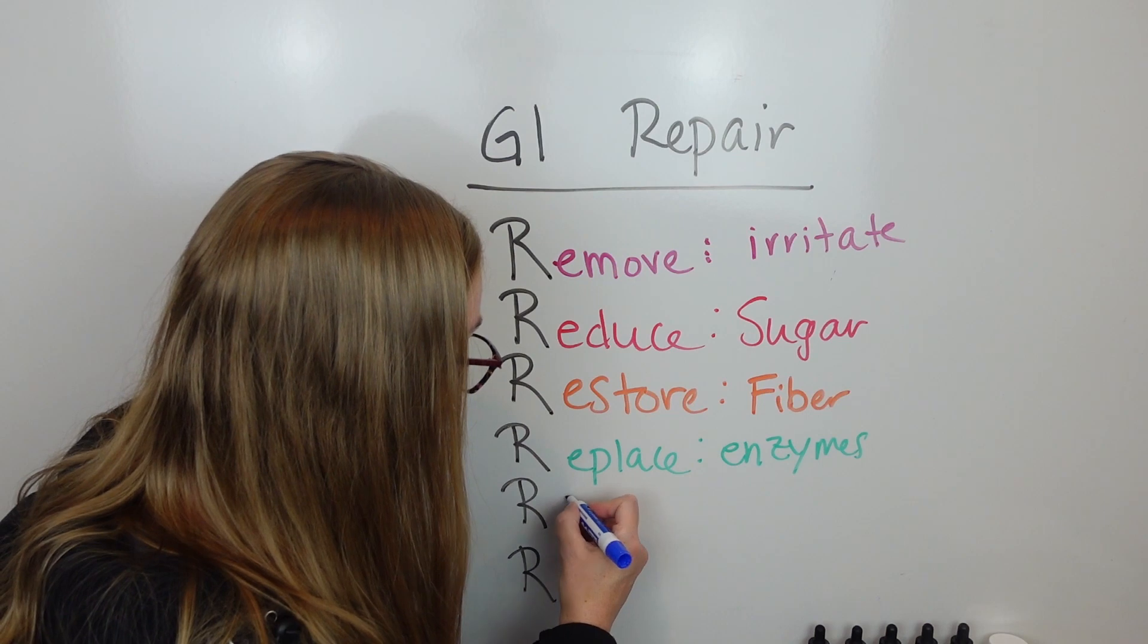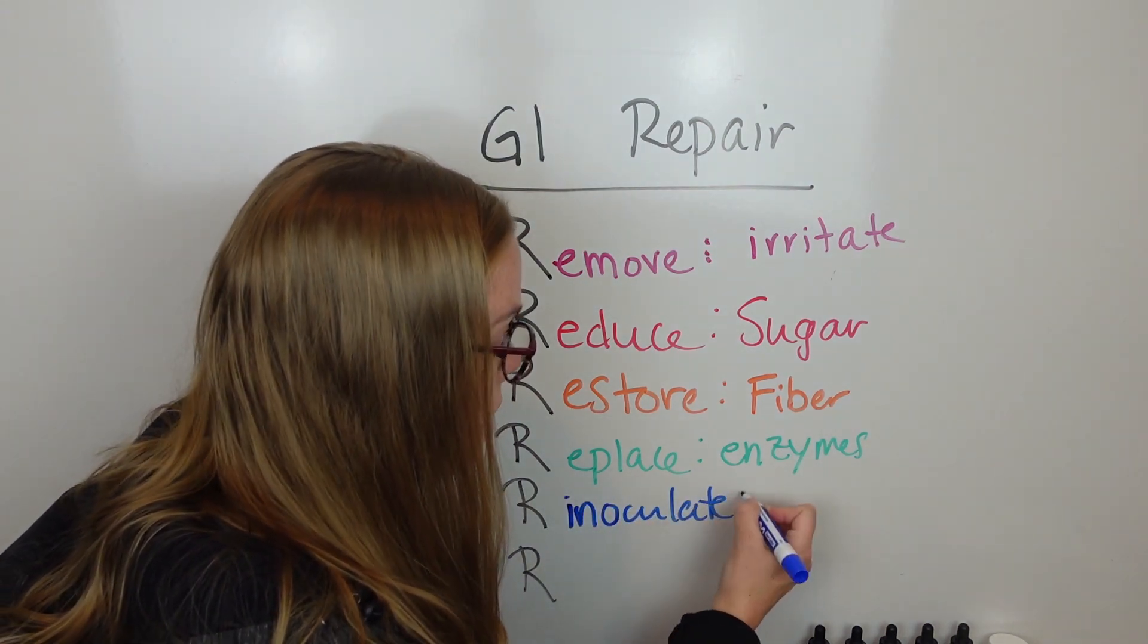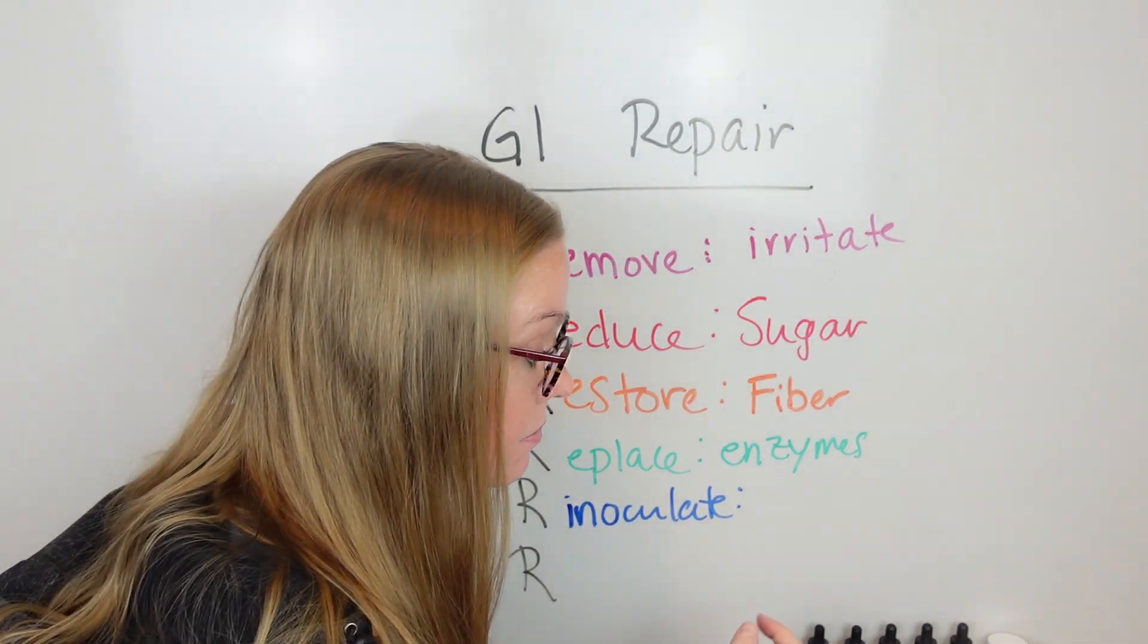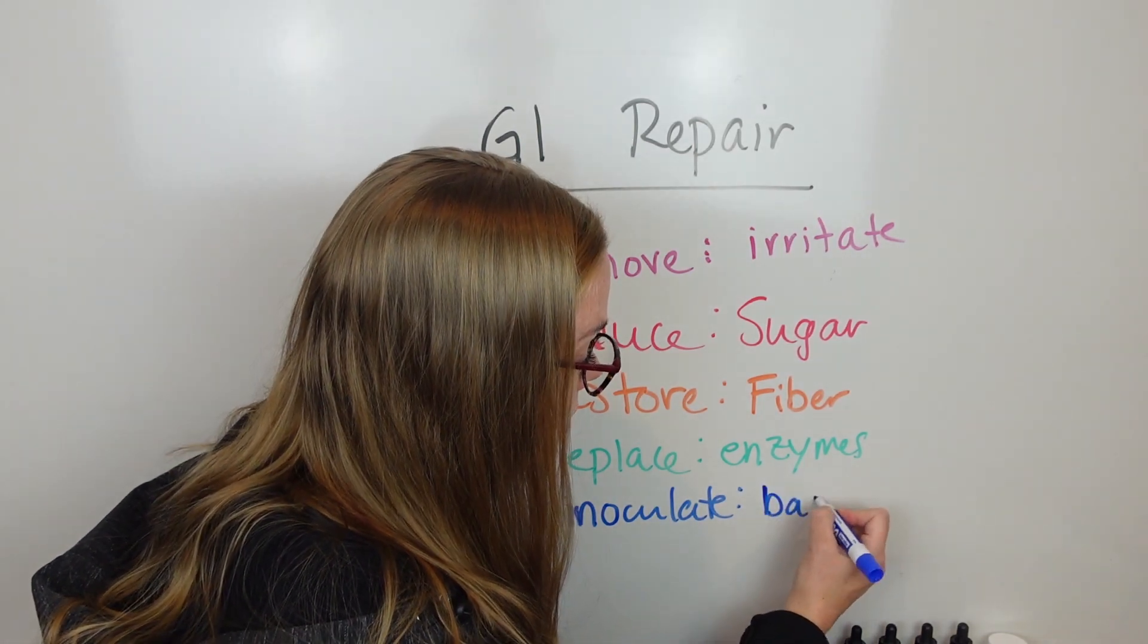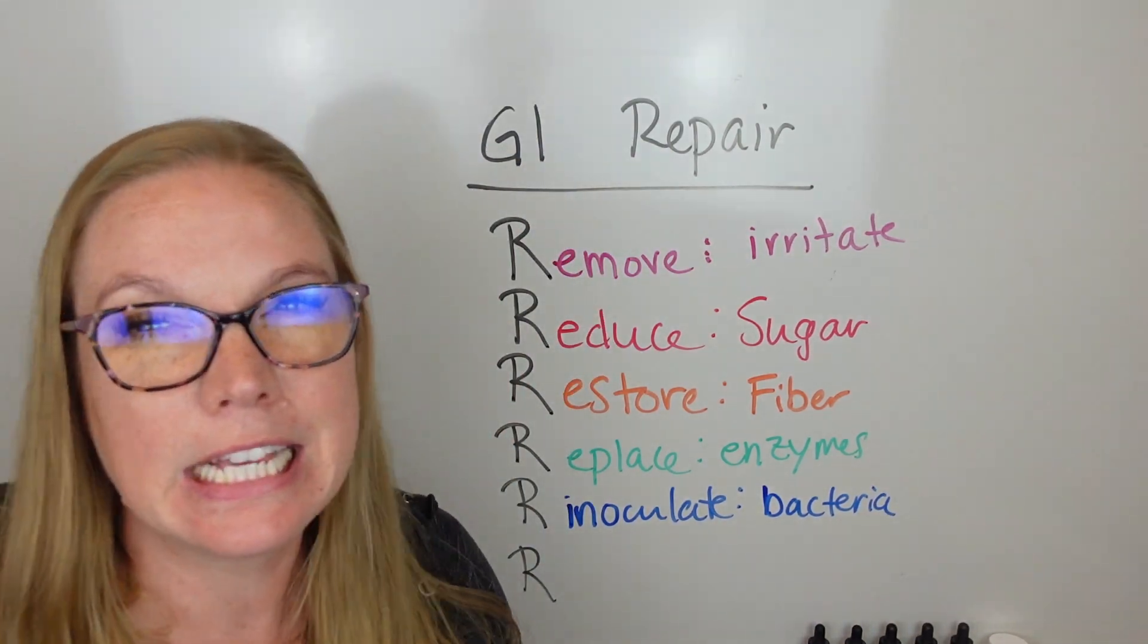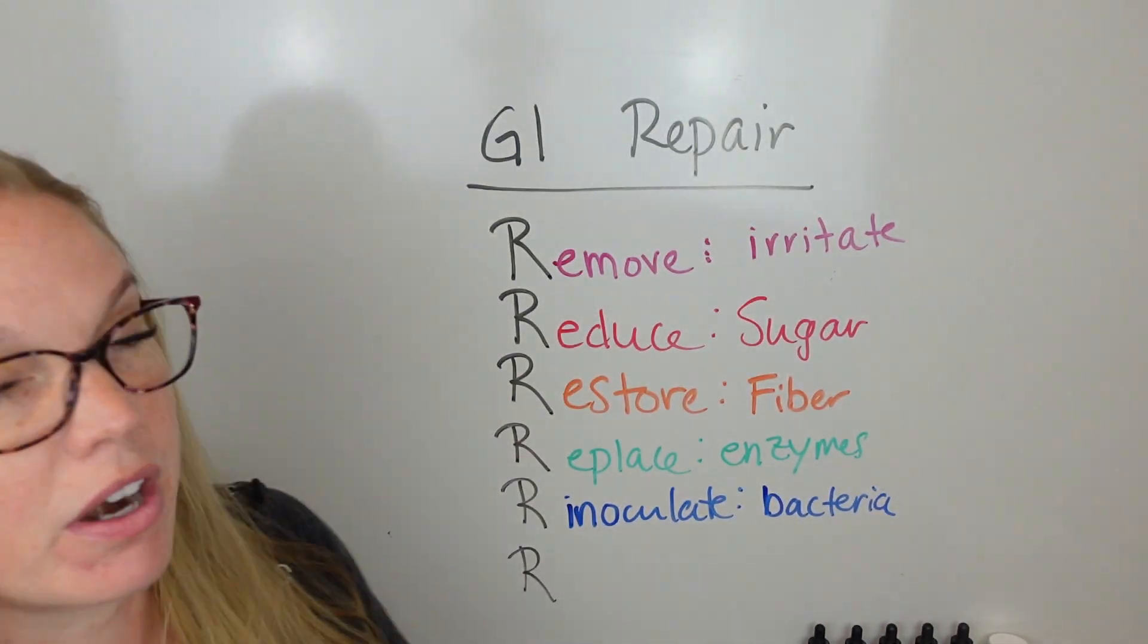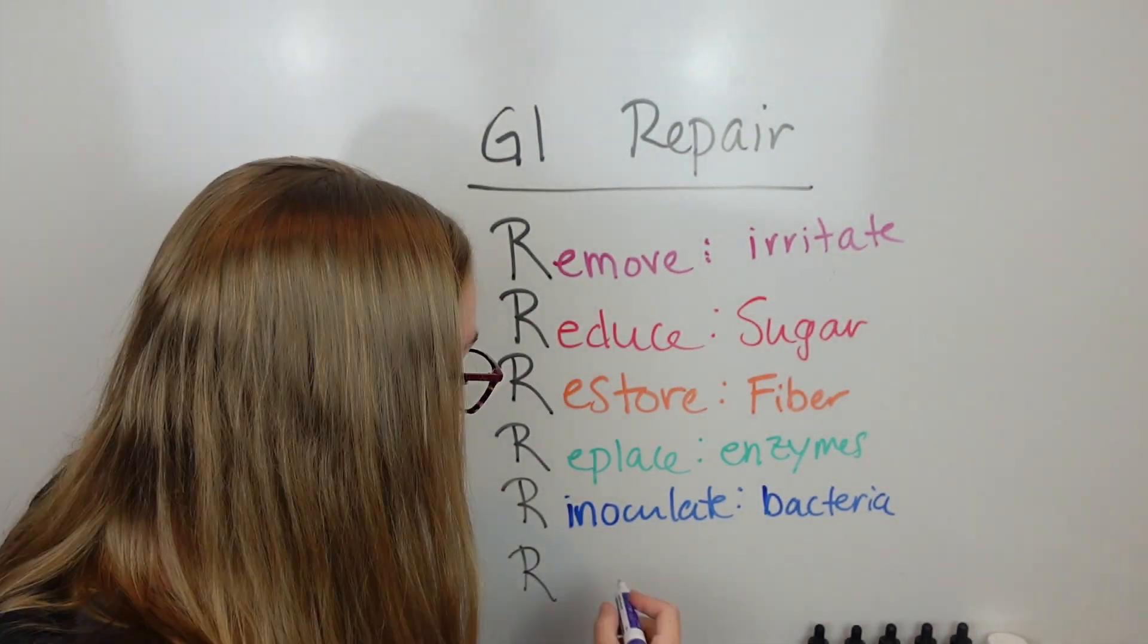The next one, the fifth one is re-inoculate. And that one would be, of course, healthy bacteria. But we want good bacteria. Keystone bacteria. Commensal bacteria. Healthy bacteria. Good bacteria. That helps us break down our food and have good mucus production and everything else.